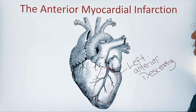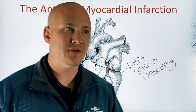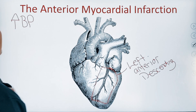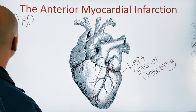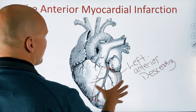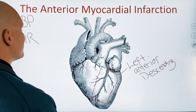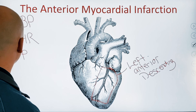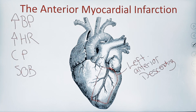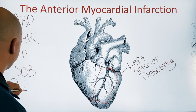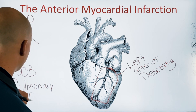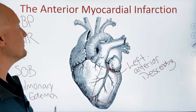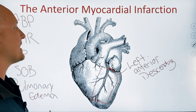When this particular vessel is affected, we often see pretty severe symptoms. First, we often see a very high blood pressure, and we'll explain why in a bit. We also often have a high heart rate or tachycardia as a compensating factor. We obviously have chest pain — ischemic chest pain — and we often will have shortness of breath as well as possibly pulmonary edema. This patient has the highest mortality rate of all myocardial infarctions when it involves the left anterior descending artery.